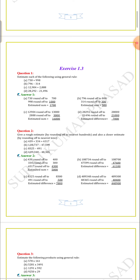The next question: 1,08,737 minus 47,599. 1,08,737 rounds off to 1,08,700 by rounding to the nearest hundreds, since the nearest hundred for 737 is 700. Then 47,599 rounds off to 47,600, as 600 is the nearest hundred for 599. The estimated difference is 61,100.